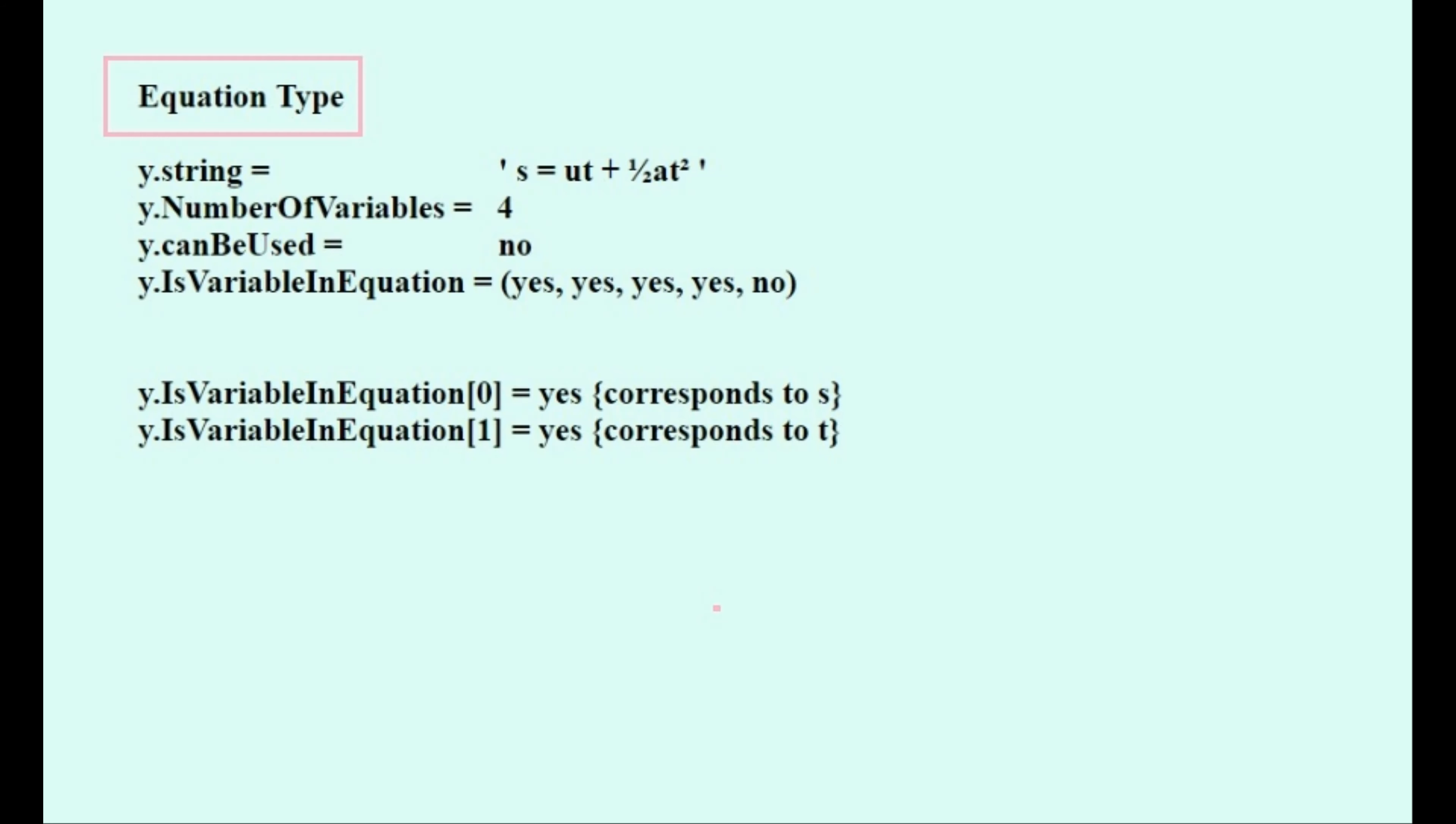And similarly, the next value in the list corresponds to the variable T and is set to yes because it can be found in the equation as well. But the last value on the list corresponds to V, and since V can't be found in the equation, then it is set to no.